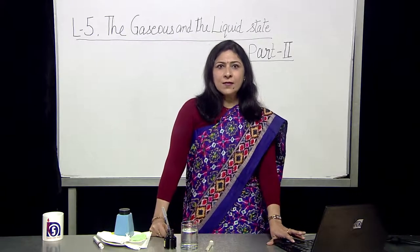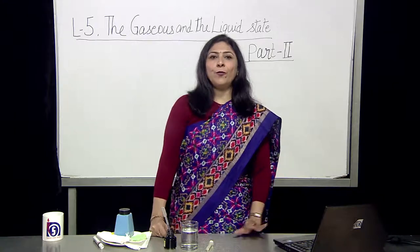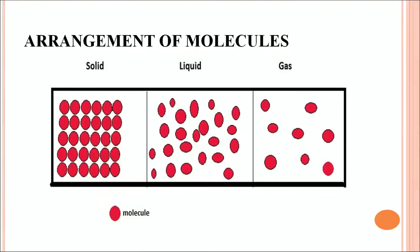Now let's first discuss about the arrangement of molecules — how the molecules are arranged in solid, liquid and gases. The molecules are very close to each other in solid, which means the shape and the volume is fixed in solid, and they are all based on the intermolecular force of attraction. The intermolecular force of attraction is maximum in solid, then in liquid, and in gases it is least.